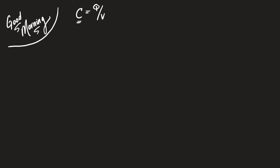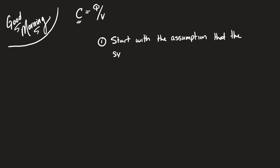That alone is the definition, but it doesn't tell you the steps necessary. There are basically four steps to compute the capacitance of a system. The first step is to start with the assumption that the system is already charged. The system has already had a certain amount of charges moved, or it is isolated in such a way that it has a net charge.